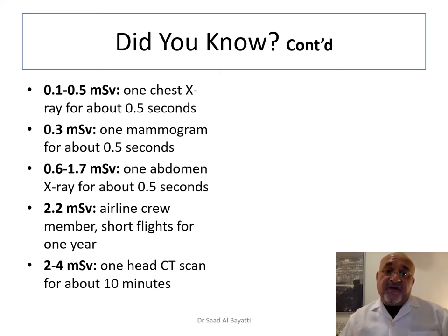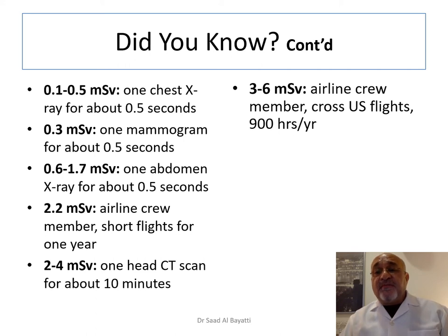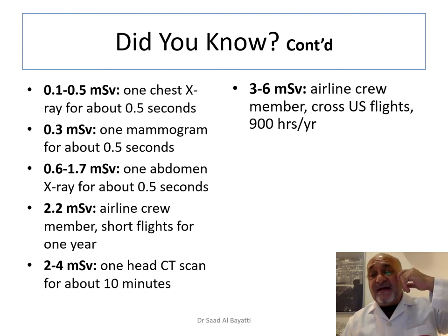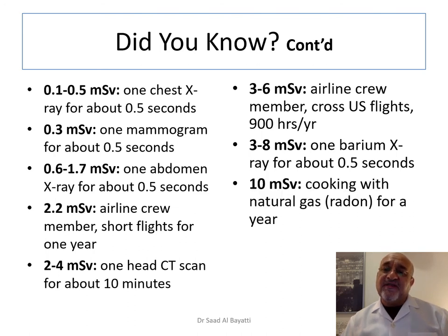A CT scan of about 10 minutes results in the patient receiving 2 to 4 millisieverts, which is a high dose. An airline crew member flying US-based routes for 900 hours per year will receive a dose ranging between 3 to 6 millisieverts, depending on the altitude and route. One barium meal or barium enema, for about 0.5 seconds of fluoroscopy, delivers between 3 to 8 millisieverts because a series of X-rays are taken, resulting in a rather higher dose.